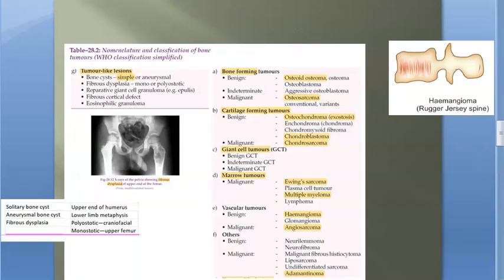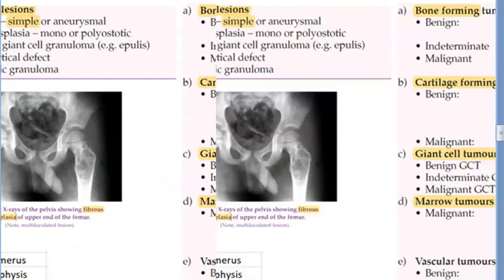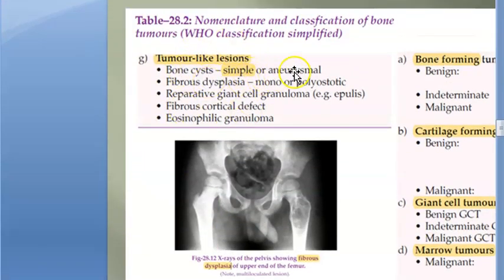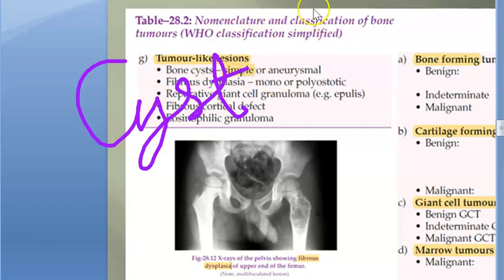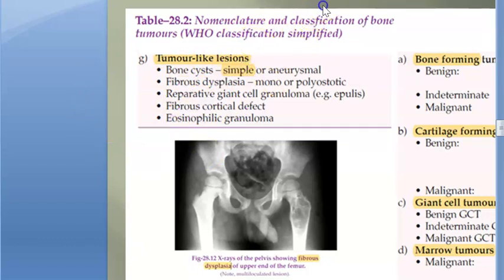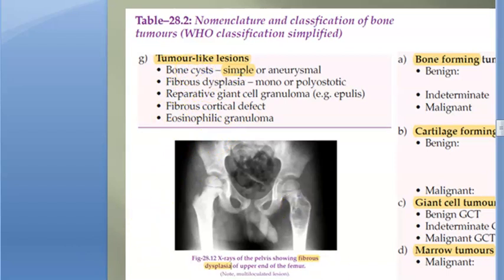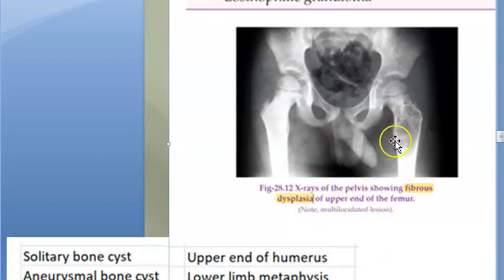Now, some conditions are tumor-like but not actually tumors. These include simple bone cysts and aneurysmal bone cysts. You also have fibrous dysplasia, which can be polyostotic or monostotic — this word is very important. They are showing an image of fibrous dysplasia of the upper end of the femur, appearing as a multi-loculated lesion.